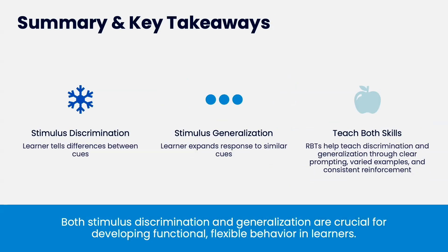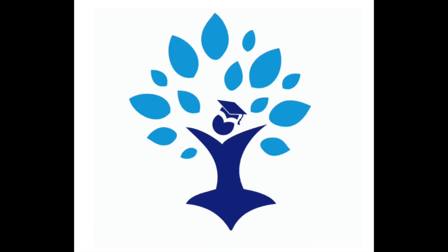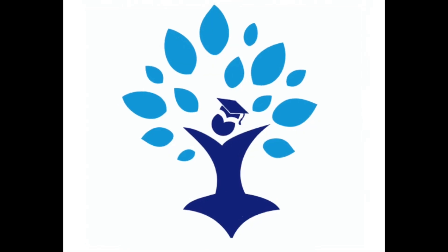So, discrimination is the learner telling the difference between cues, and generalization is the learner expanding their response to similar cues. We're going to use both — it just depends on what we need for that concept. We're going to do this through prompting, examples, and consistent reinforcement. Thank you.